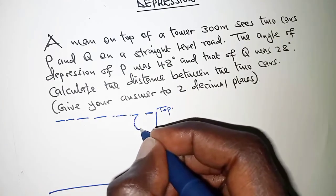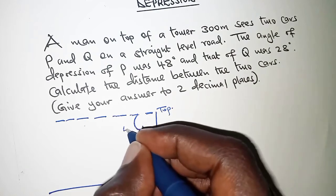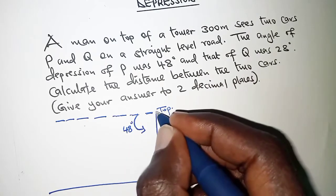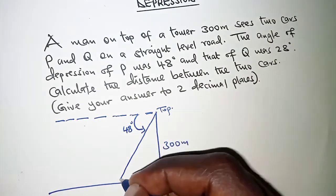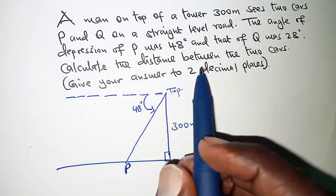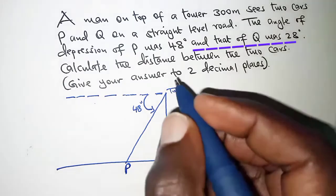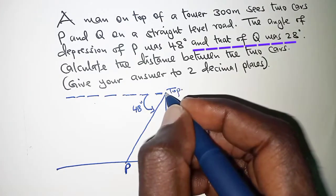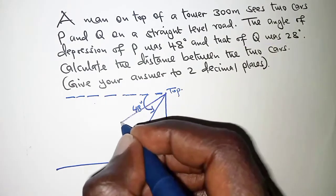At an angle of depression of 48 degrees is able to observe car P. And then, we also have the second car observed at an angle of depression of 28 degrees.